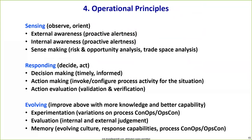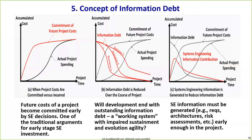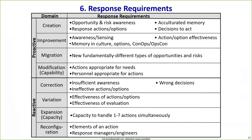The fifth concept is information debt. We became very aware of this as we found that systems in the field were having to evolve, often years later, by teams that weren't involved in the initial development because those people had left the company or moved on. The concept of being able to evolve an immortal system very much requires real-time accurate documentation. Response requirements is the sixth and final finding we'll briefly cover, as we're going to spend more time on findings seven and eight.